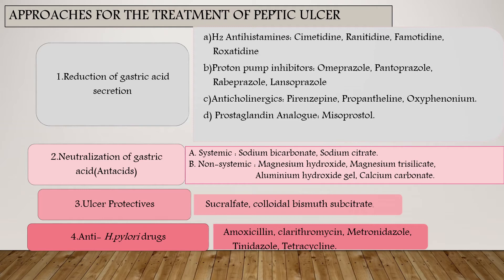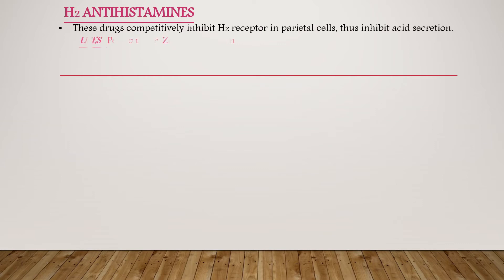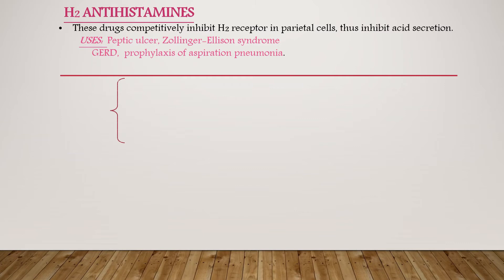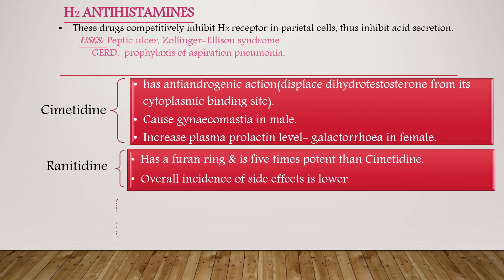Now let's see the drugs in detail. H2 antihistamines are also known as H2 antagonists or H2 blockers. They act by blocking the action of histamine, thereby inhibiting acid secretion. The drugs are cimetidine, ranitidine, and famotidine. They are used for the treatment of peptic ulcer, Zollinger-Ellison syndrome, and gastroesophageal reflux disease.